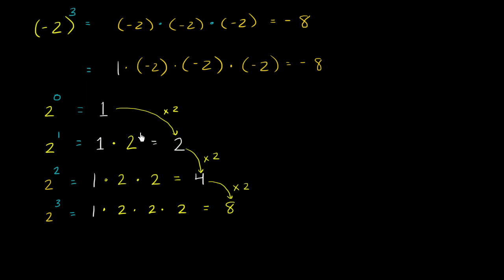This gives another intuition for why something to the 0 power equals 1. If we go backwards — if we didn't know what 2 to the 0 power is — when we go from 2 to the 3rd to 2 to the 2nd, we divide by 2, going from 8 to 4. Then we divide by 2 again from 2 to the 2nd to 2 to the 1st. It seems we should divide by 2 once more going from 2 to the 1st to 2 to the 0, and that gives us 1.